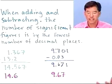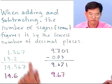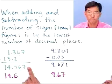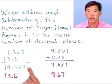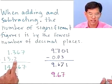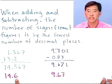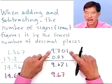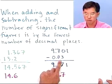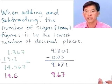When adding and subtracting numbers, the result is given by the number with the fewest decimal places. For example, adding two numbers gives 14.567 on the calculator, but we round to the number that has the fewest decimal places — the top number has three decimal places, the bottom has one, so we round to one decimal place and get 14.6. Similarly, 9.701 minus 0.03 gives a calculator result that rounds to two decimal places, giving us the correct answer of 9.67.